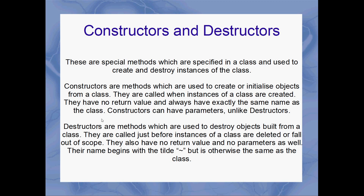Unlike destructors, constructors can take parameters. Destructors are methods which are used to destroy objects built from a class, or more usually, they're used to deallocate resources that the class has allocated during its lifetime. These are called just before instances of a class are deleted or when they fall out of scope — using the delete operator. They also have no return value. Really, the destructor doesn't return anything, unlike a constructor which can take parameters.